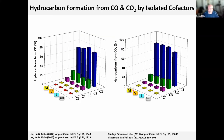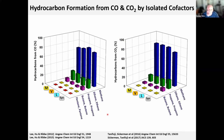We are forming a wide range of hydrocarbons, just like the protein does. In the case of CO as substrate, we form one to five carbon products; in the case of CO2, one to four carbon products. We see not only direct reduction products but also molecules generated by carbon-carbon coupling, including saturated and unsaturated products — in the case of CO, up to pentane and pentene.